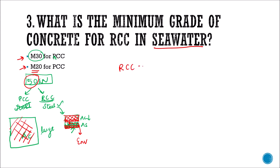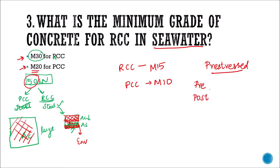In general, for RCC the minimum grade of concrete is M15; for PCC the minimum grade is M10. For prestressed structures: in pre-tensioned structures we use M40; for post-tensioned structures we use M30. Also important to remember: the minimum grade of concrete for water tanks is M20.